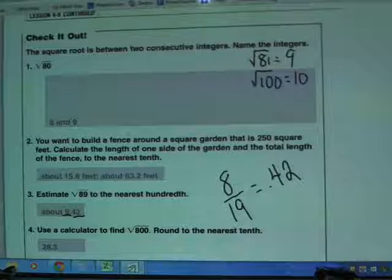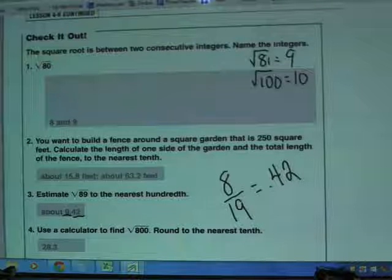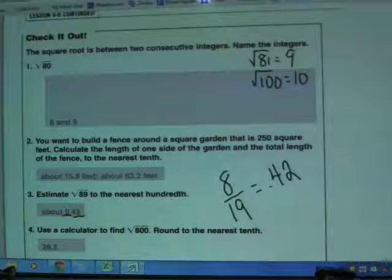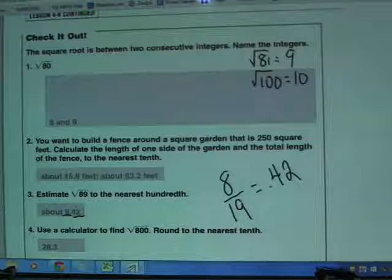28.28427125. Again, rounded to the nearest tenth, one place after the decimal, is 28.3.